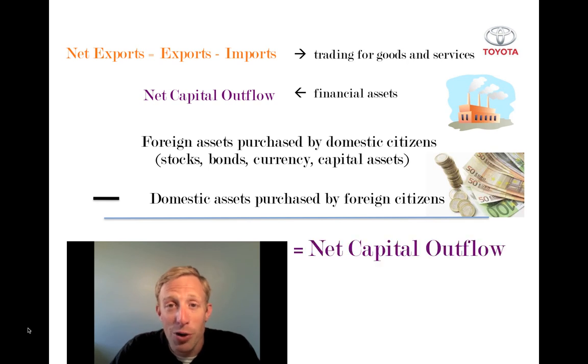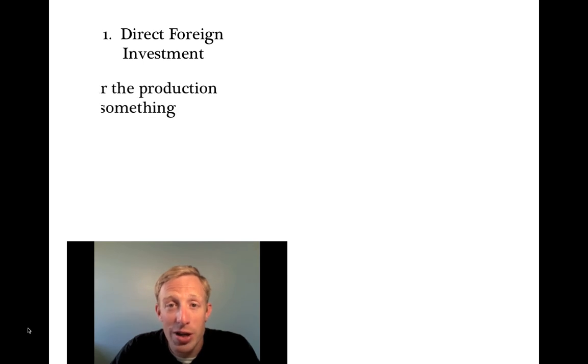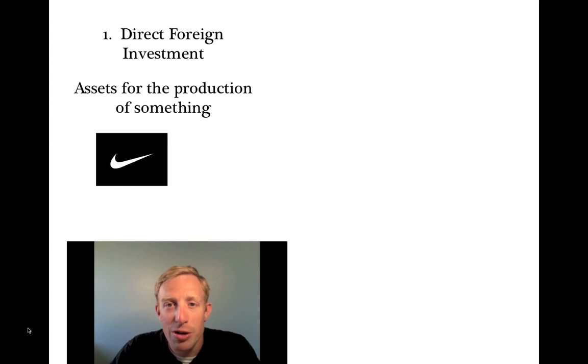Now, this net capital outflow can manifest itself in two different ways. The first way is what we call direct foreign investment. And that includes the purchase of financial assets that are going to be involved in the production of something. So for example, if Nike sets up a factory in Indonesia to make shoes, and they're going to be directly controlling those assets, that's direct foreign investment.